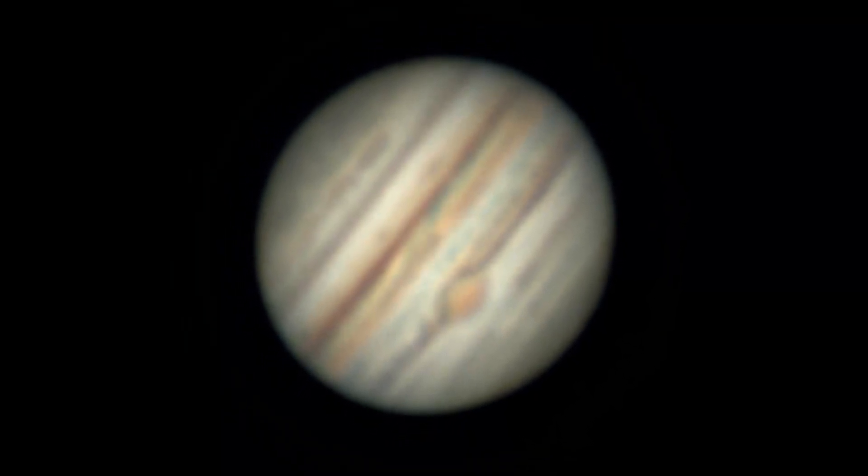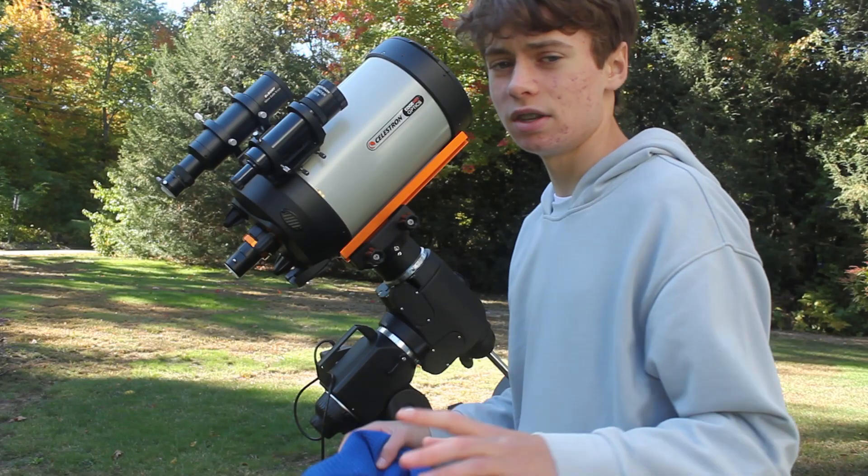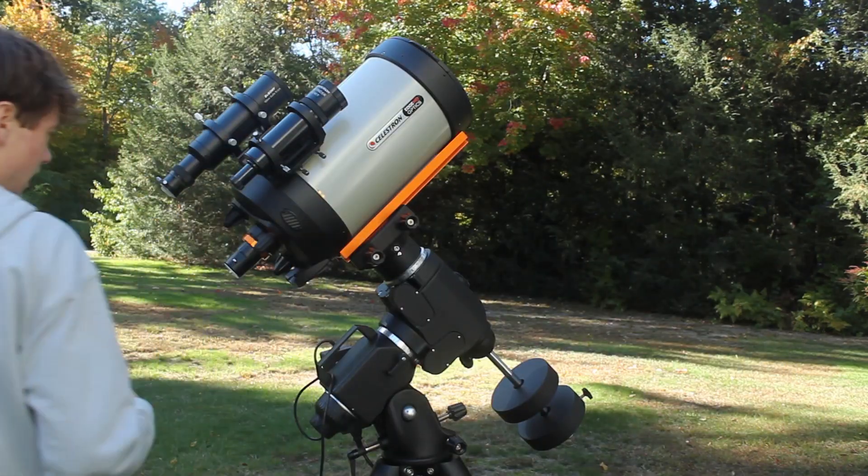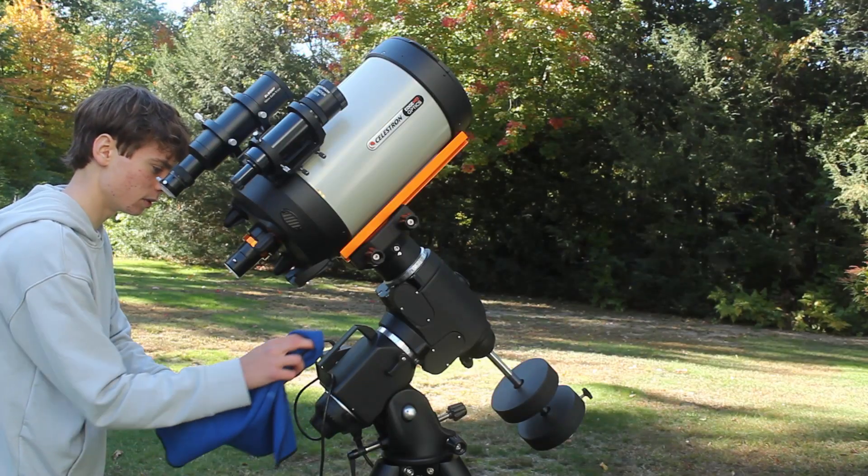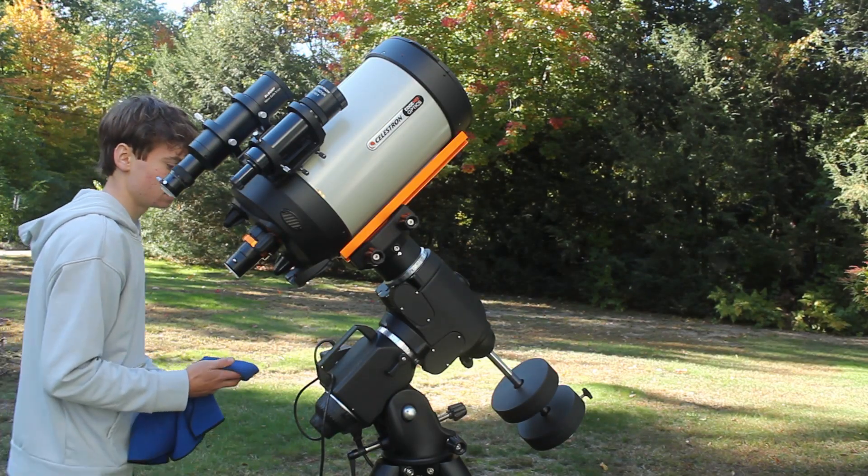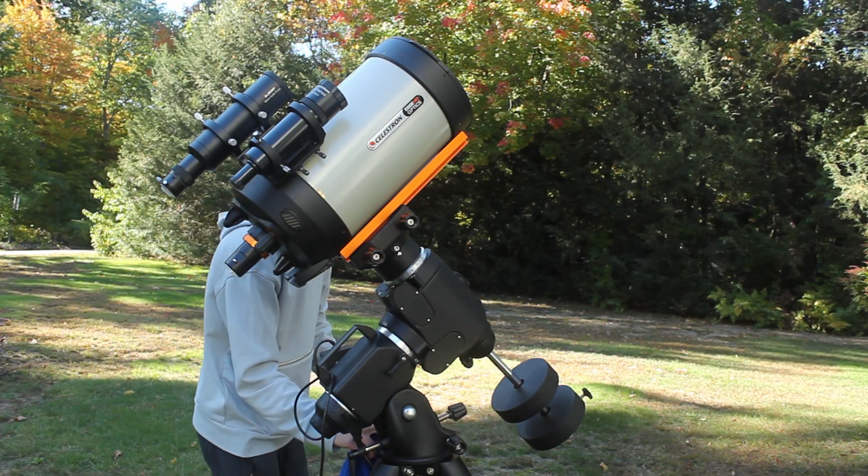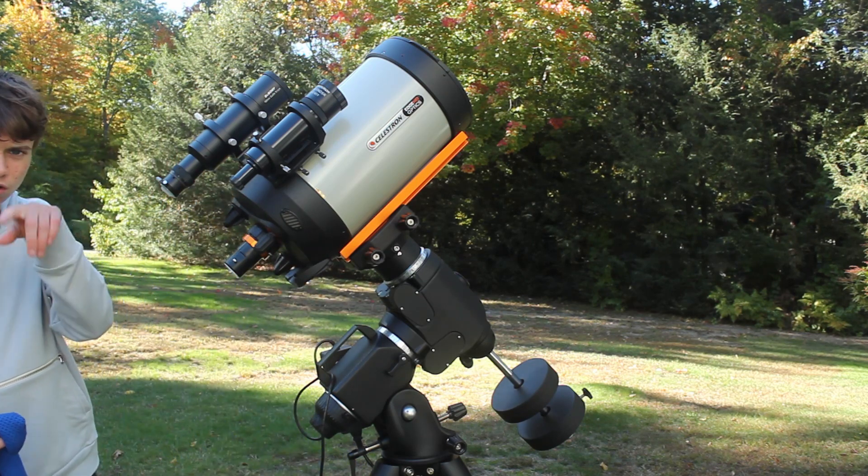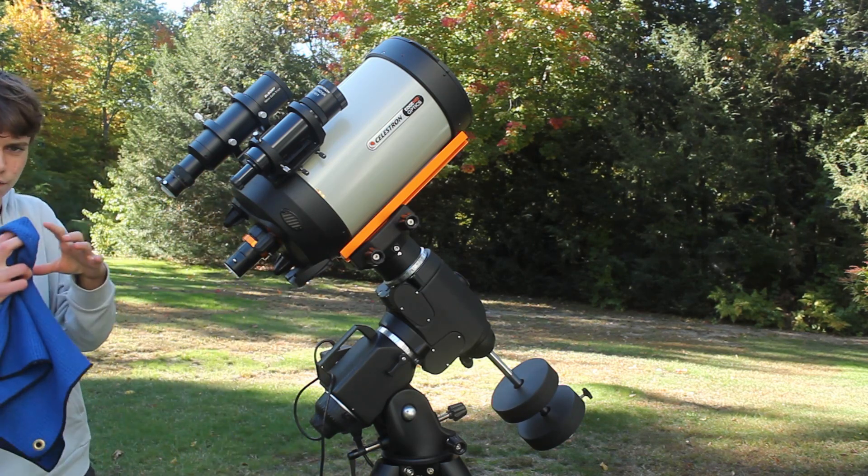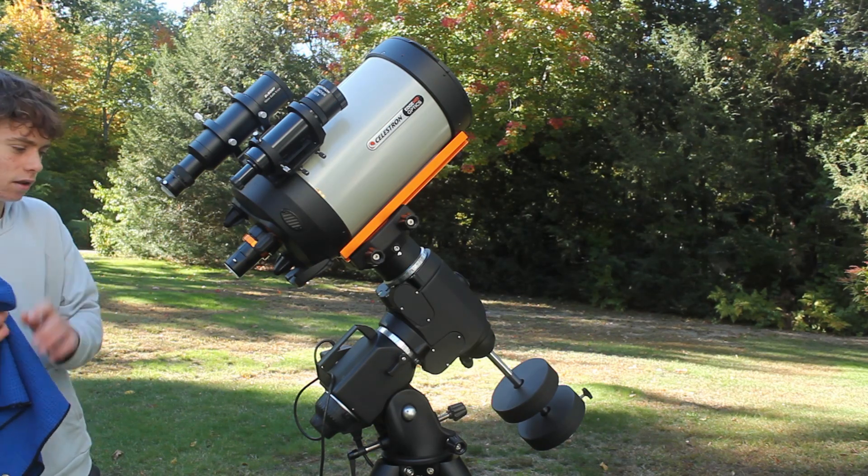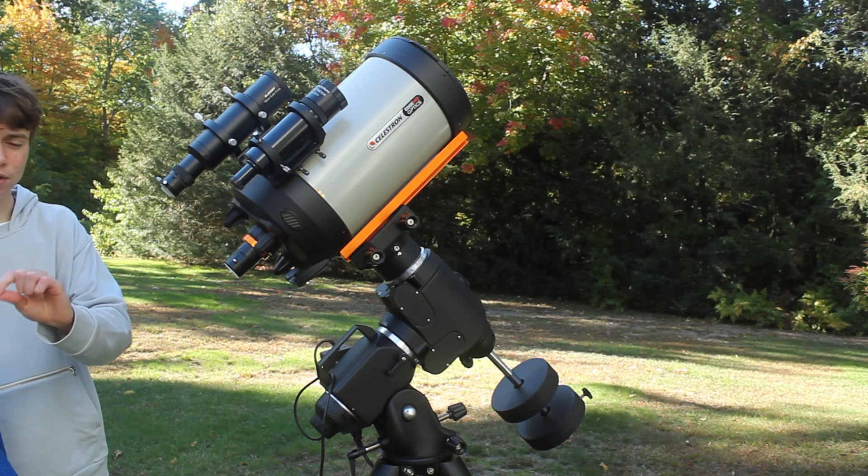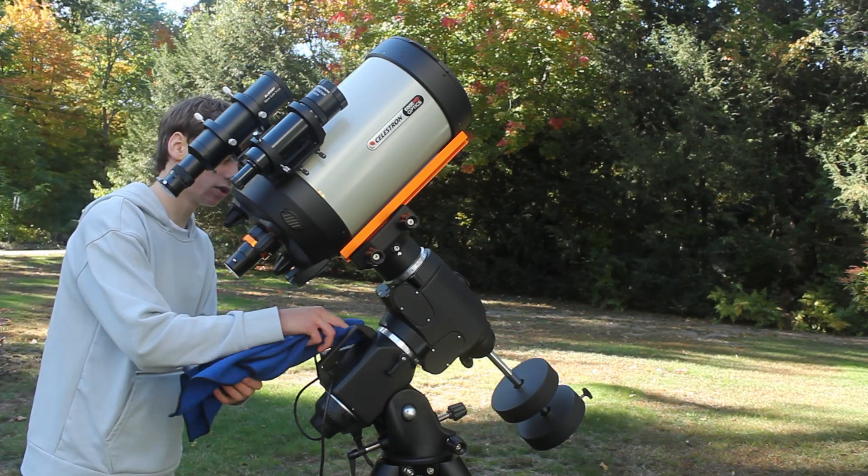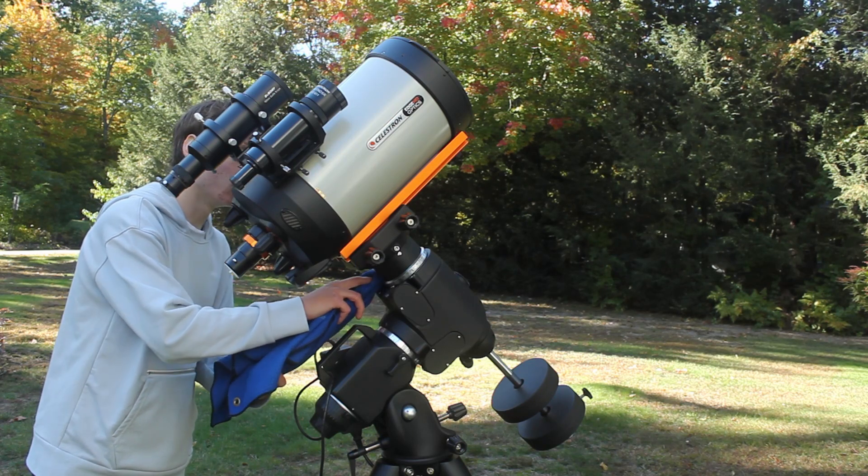The second thing - and these two things go hand in hand - are collimation and focus. You can't reach good focus without good collimation. What you want to do before you go out to image planets is test this out on a star. Go all the way out of focus, and if the star looks round with the center of the telescope looking like a little black hole in the middle of that star that's centered, then you're collimated.